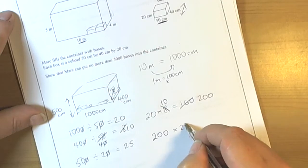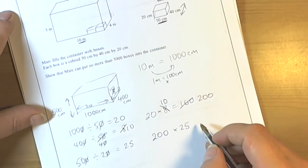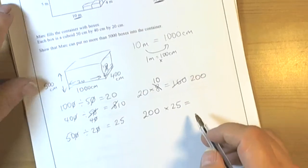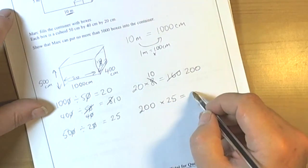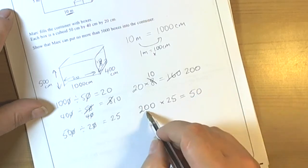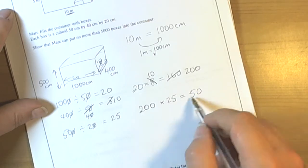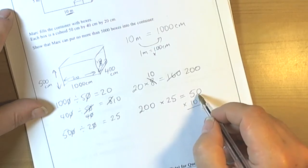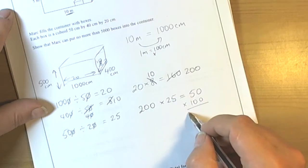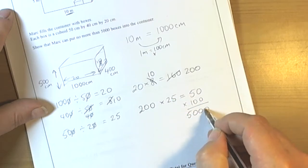That means we're going to end up doing two hundred times twenty-five to find the total number of boxes within the container. Two times twenty-five is fifty, but we've got to deal with the fact that this is two hundred, so we have to multiply by a hundred. Fifty times a hundred means everything up two place values, so we'll end up with five thousand.